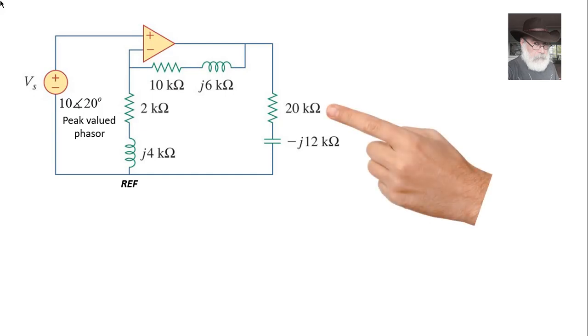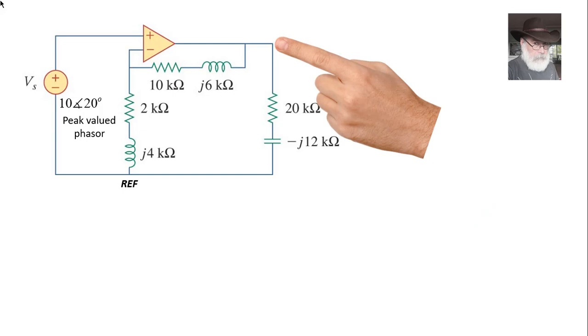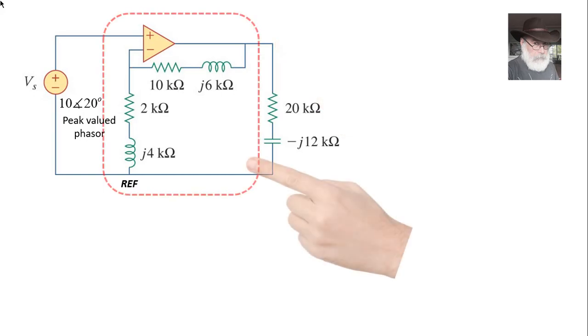If we know the current in that resistor, it would be easy to compute P, the active, the average power in that resistor. To compute that current, we need this voltage up here, the output voltage of the amplifier. Let's find that one. We have realized already that this is a non-inverting amplifier.